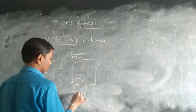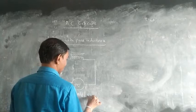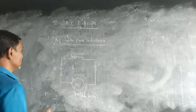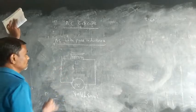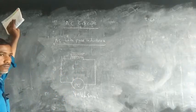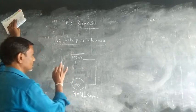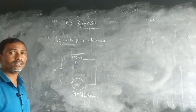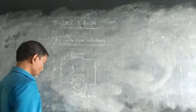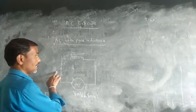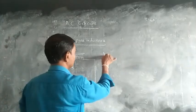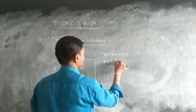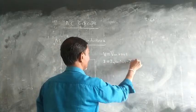Let V be the voltage whose value is Vm sin of omega t. Let I be the current flowing through this inductor. When current flows, the inductance opposes the current — this opposing property is called inductive reactance. The voltage equation is Vm sin of omega t, and the current equation is Im sin of omega t minus 90°. The minus sign means lag; the plus sign means lead.